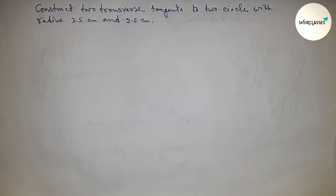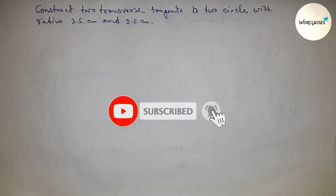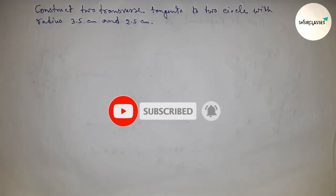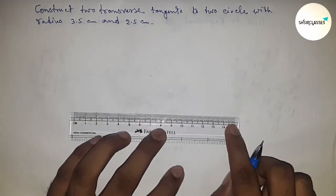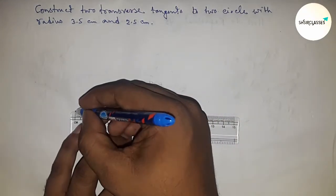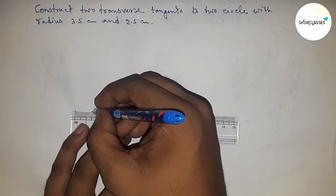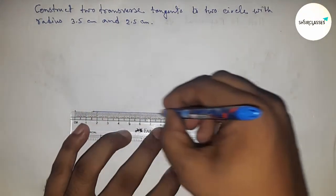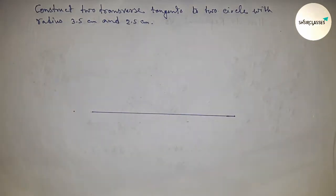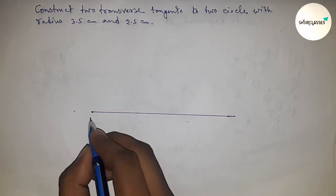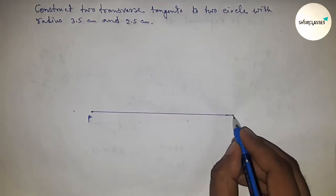Hi everyone, welcome to SSZ Classes. Today we are talking about the construction of transverse tangents to two circles with radii 2.5 and 3.5 centimeters. First, drawing a line of any length and marking the points P and Q.